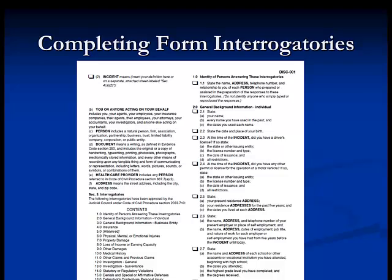Form interrogatories contain check boxes to identify the questions you wish the other side to respond to. To ask the other side a question, simply check or X the box in front of the question. These questions are broken into number groups and will contain a decimal. Any question being asked will be a .1, .2, .3, etc. The bold-faced sections labeled .0, such as 1.0, 2.0, 3.0, etc., are not interrogatories, but are instead just identifying the types of questions in the following section. For example, 2.0 General Background Information Individual identifies that the entire two-series of questions are general background questions appropriate to ask an individual.